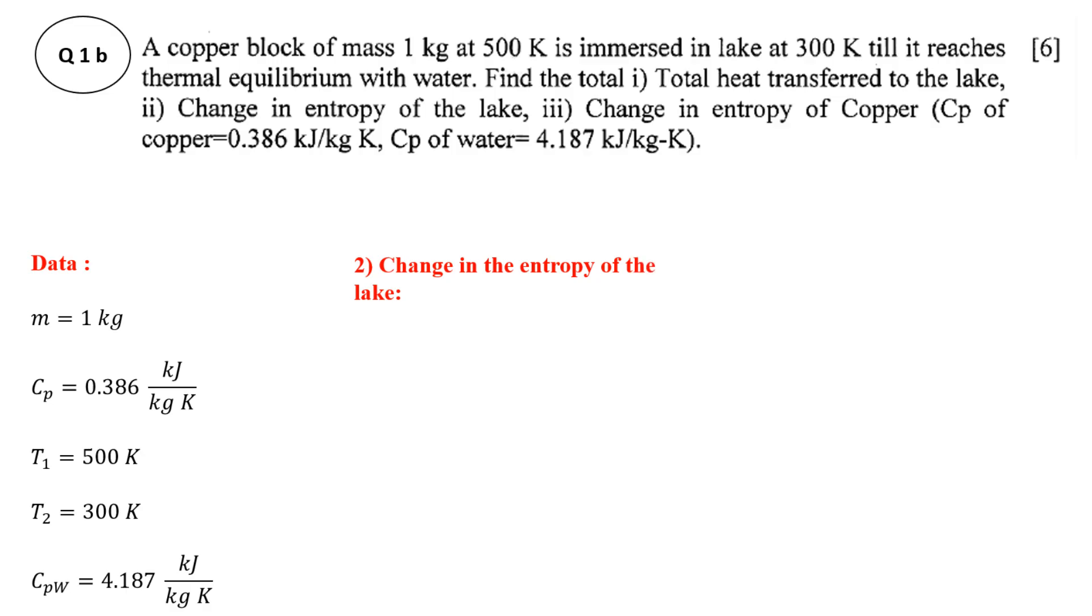The second thing that we have to find out is the change in entropy of the lake. Change in entropy of the lake is equal to heat transfer to the lake divided by temperature of the lake. The lake is considered as a reservoir so we can directly use this formula. Heat transfer to the lake is positive, that is 77.2, as the heat is received by the lake. The change in entropy will be positive and temperature of the lake is 300, so it is 0.2573 kJ/K.